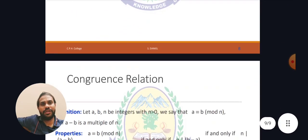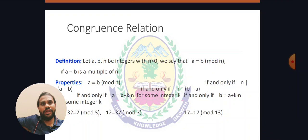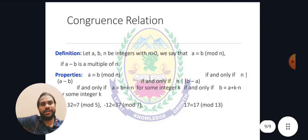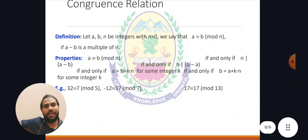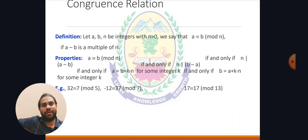Congruence relations: let a, b, and n be integers with n greater than 0. We say a is congruent to b mod n if a minus b is a multiple of n. The property states that a is congruent to b mod n if and only if: n divides a minus b, or n divides b minus a, or a equals b plus k times n for some integer k, or b equals a plus k times n for some integer k.